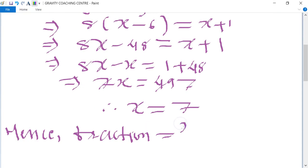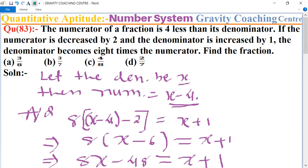Equals 7 minus 4 upon 7, which equals 3 upon 7. So this is the required answer, and option B is the correct answer.